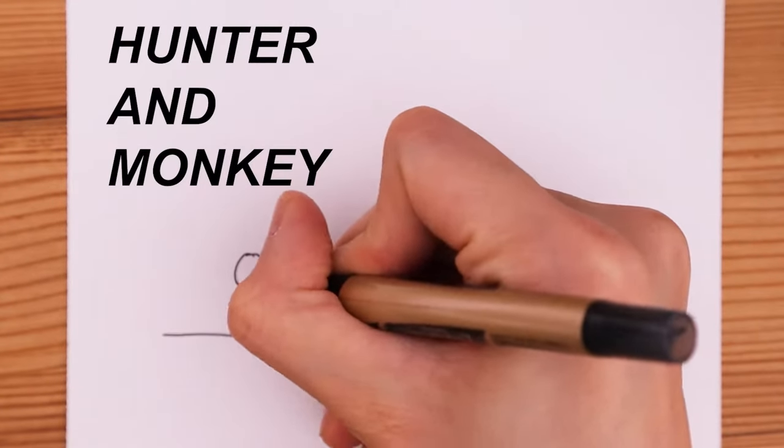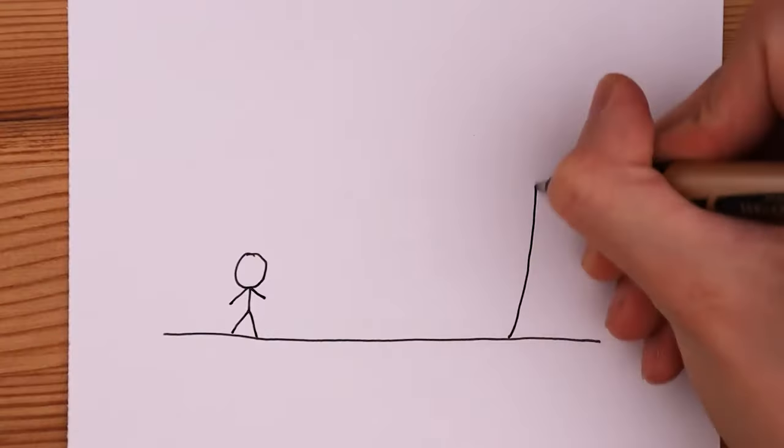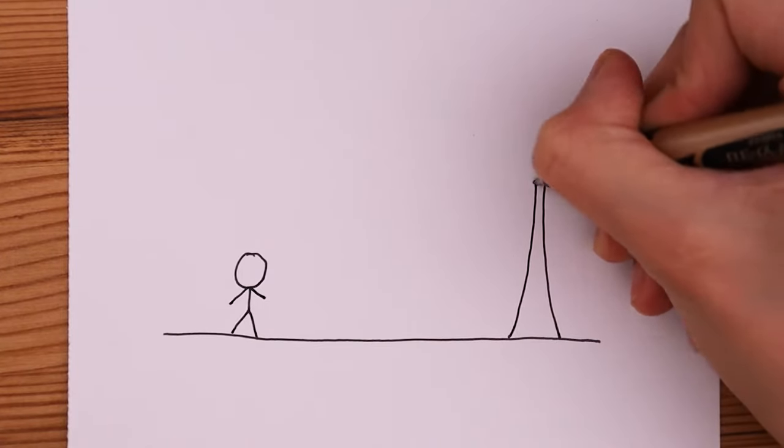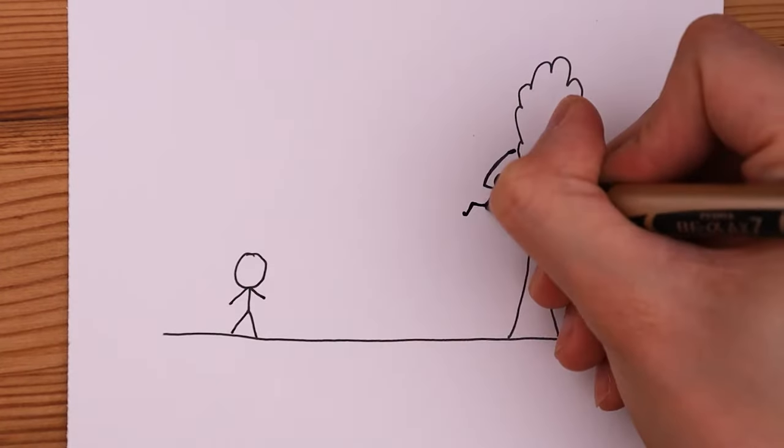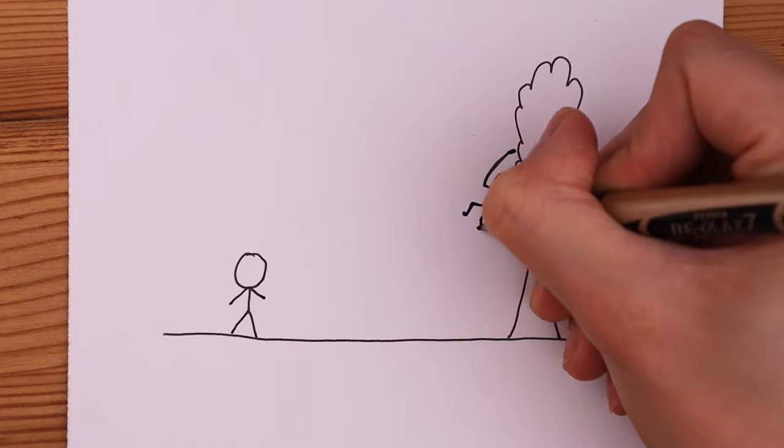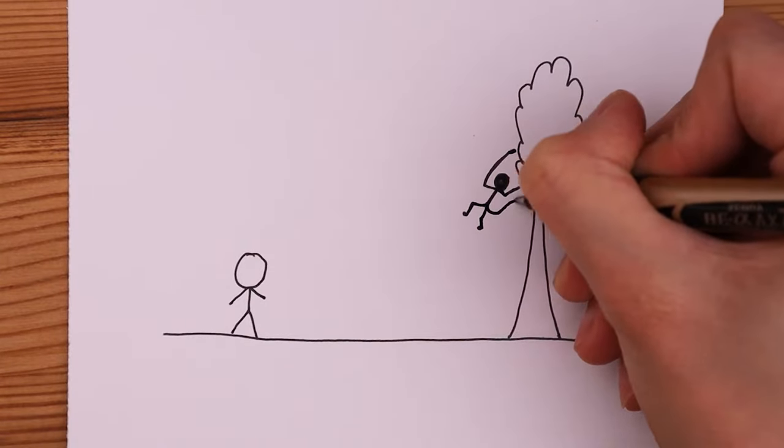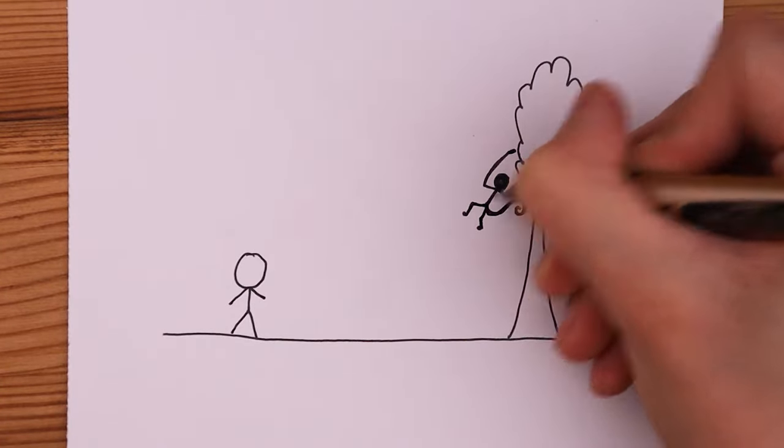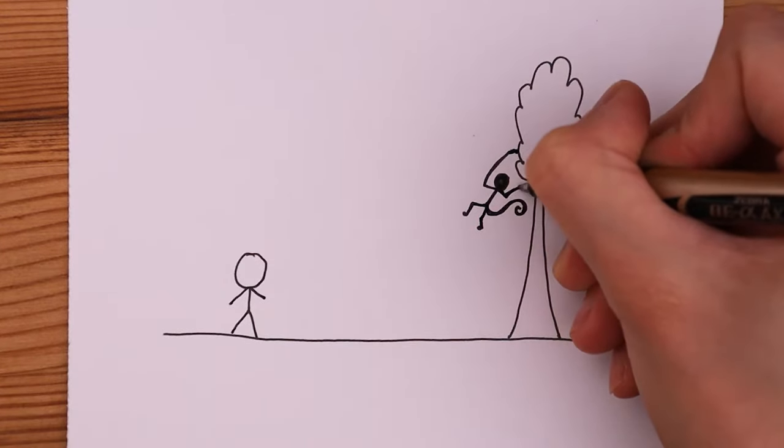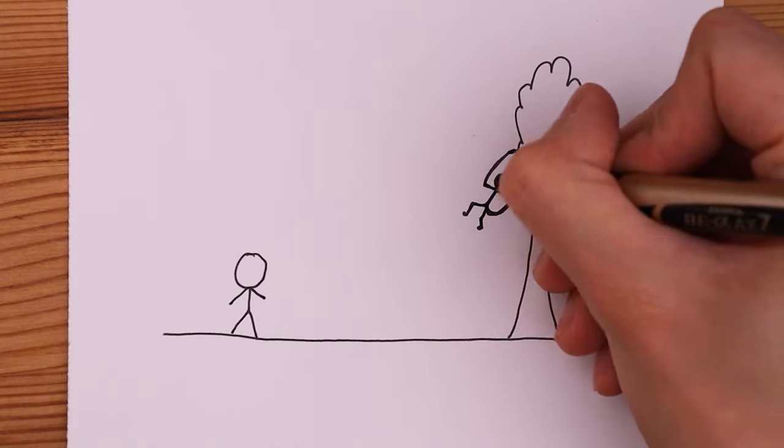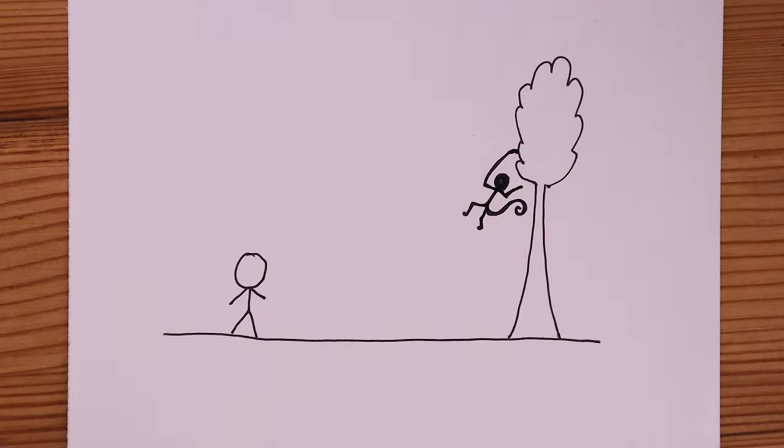There's this famous thought experiment for projectile motion involving a hunter and a monkey. When a hunter sees a monkey hanging from a tree, he stops in front of the tree at a distance. Traditionally, we would say that this hunter wants to shoot it down with a bullet, but let's be more humane and say that he's using a tranquilizer bullet instead.